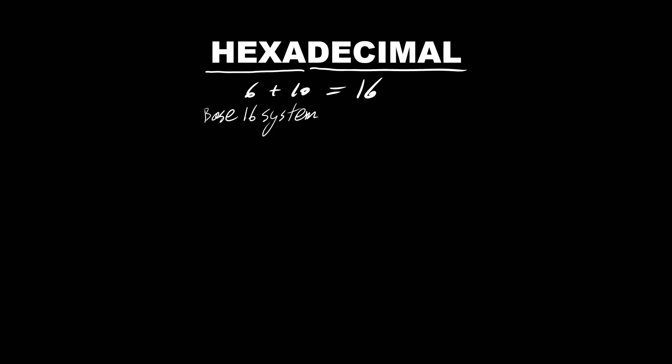There are 16 symbols in hexadecimal system: 0, 1, 2, 3, 4, 5, 6, 7, 8, 9, A, B, C, D, E, and F. That's a total of 16 numbers including 0.